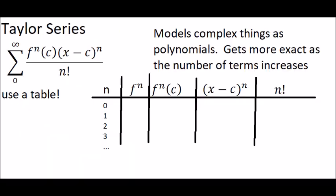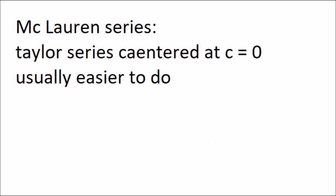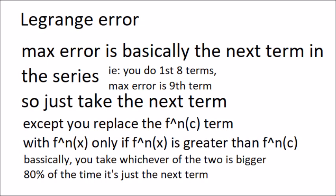Taylor series are basically polynomial approximations of functions centered at certain points. The more terms you have, the more precise they are. It goes in the form of the nth derivative of f evaluated at its center times x minus c to the n all over n factorial for each term, and you just do as many terms as it asks you to do. Using a table is very beneficial here. A Maclaurin series is simply a Taylor series centered at 0, so it's much easier. Lagrange error is equal to your next term, basically.